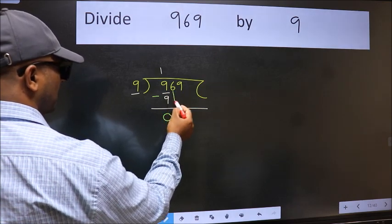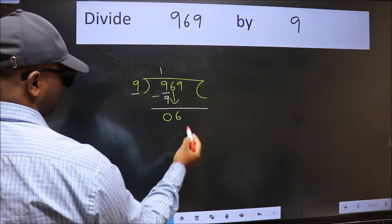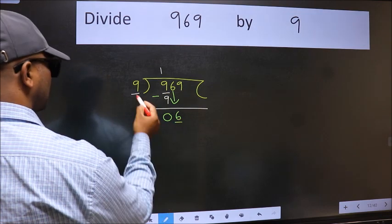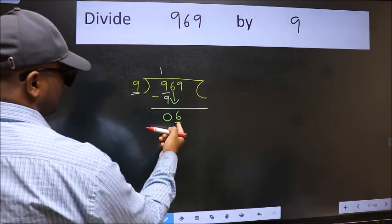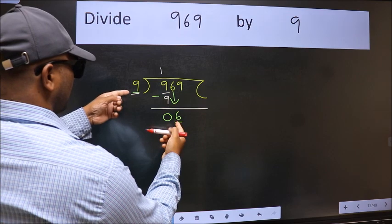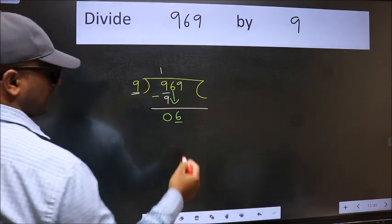After this bring down the beside number. So 6 down. Now here we have 6 and here 9. 6 is smaller than 9. So we should bring down the second number.